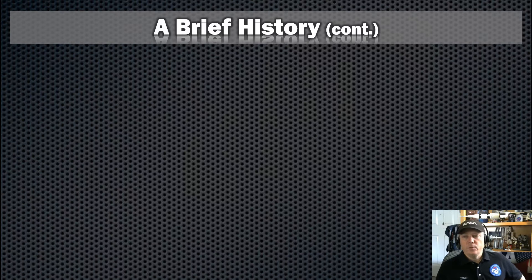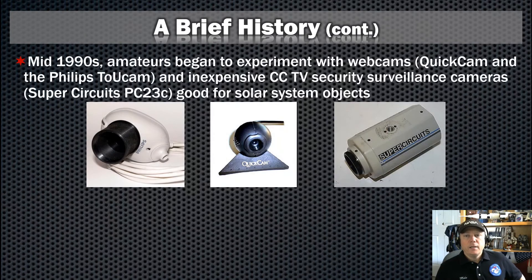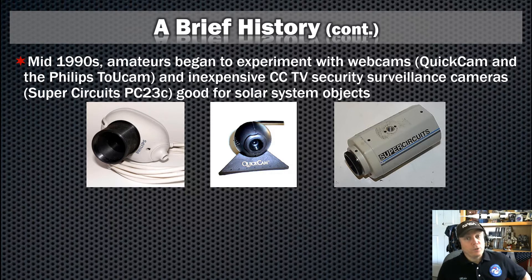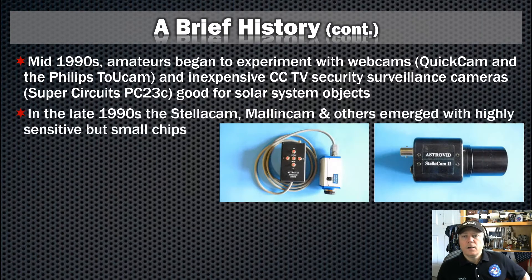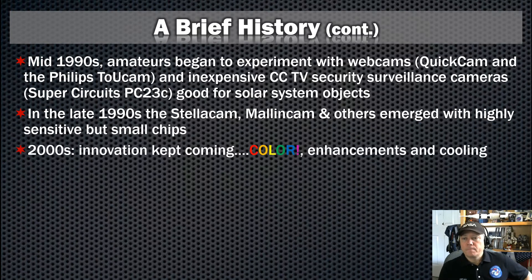Continuing into the modern era, in the 1990s amateurs began to experiment with webcams such as the QuickCam and the Philips ToUcam, as well as inexpensive CCTV security surveillance cameras — the SuperCircuits camera was an example of that. These cameras were actually okay for solar system objects. Then a little later in the 1990s, companies such as StellaCam and Malincam emerged with some very sensitive but small chips. Innovations kept coming — color capability, enhancements in the cameras, as well as cooling.